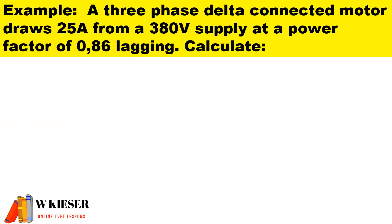In this example, a three phase delta connected motor draws 25 amps from a 380 volts supply at a power factor of 0.86 lagging.